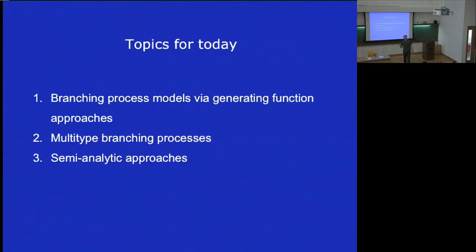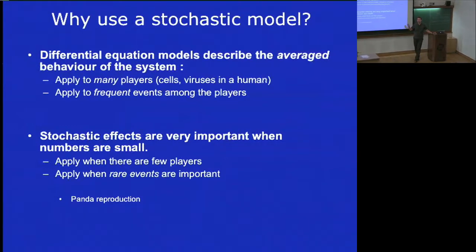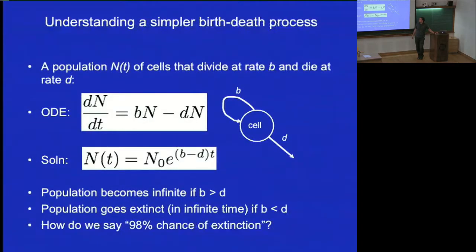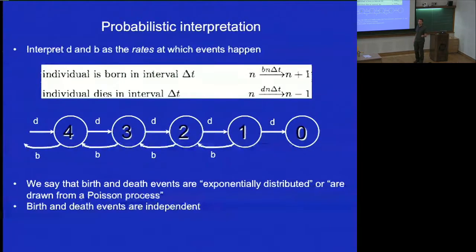So today, the main tool we're going to study in the class is going to be the generating function. Let's figure out what the generating function is, and then we'll have some problems. So I'm just repeating the reasons why we use stochastic models — it's when we have small numbers and rare events. If you remember the viral blips: you have a patient on stable treatment and they'll just occasionally show a blip, and we don't really understand exactly why.